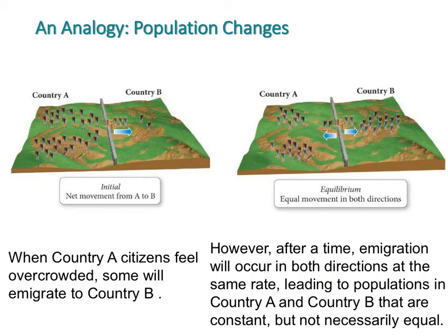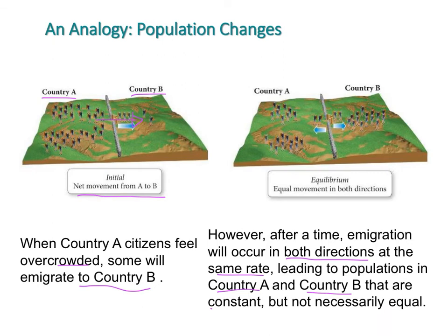As an analogy, consider two countries — country A and country B. Country A citizens feel overcrowded and move to country B. After some time, migration is happening in both directions at the same rate. Both countries have constant but not equal populations. This constant equal movement between both countries is what equilibrium represents — equal rates of change, not equal amounts.